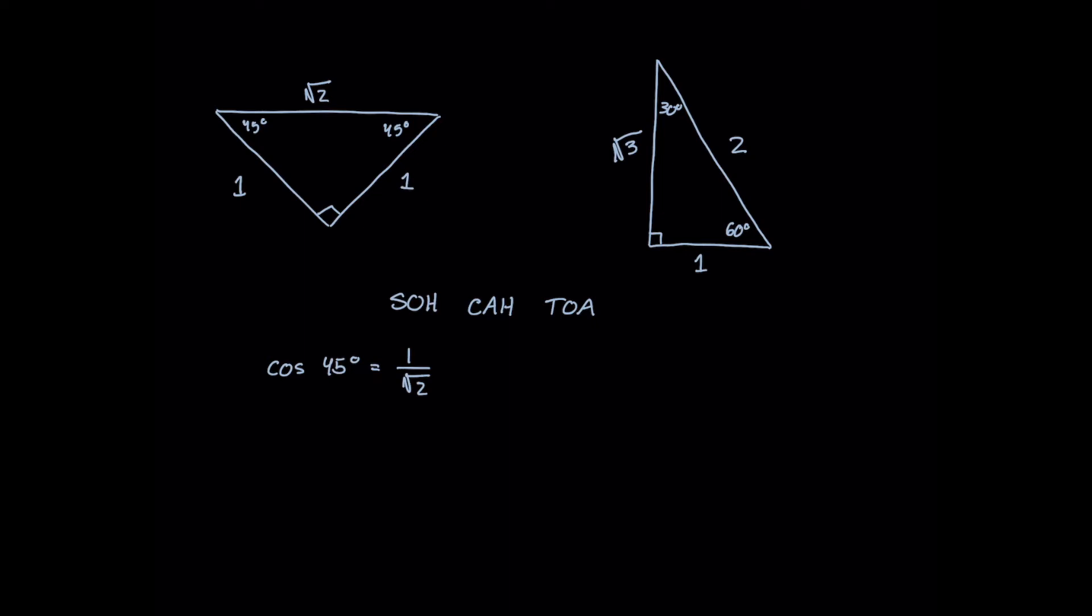And then let's say we want to calculate something like sine of 60 degrees, so something a little bit different here. What we can do is opposite over hypotenuse, so root 3 over 2.